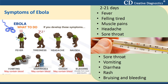It can take from 2 to 21 days, but usually 8 to 10 days, after infection for signs of Ebola to appear. Symptoms can seem like the flu at first: sudden fever, feeling tired, muscle pains, headache, and sore throat. As the disease gets worse, it causes vomiting, diarrhea, rash, and bruising or bleeding without an injury, like from the eyes or gums.